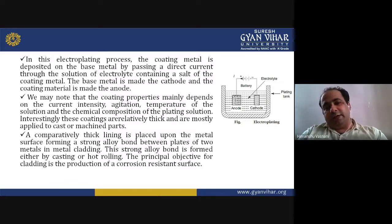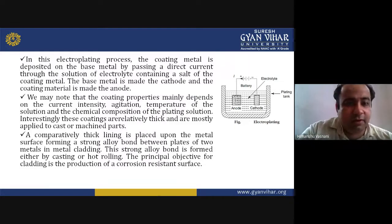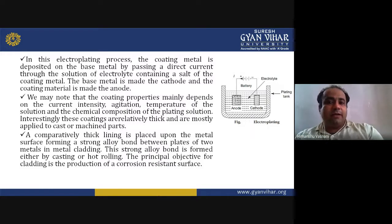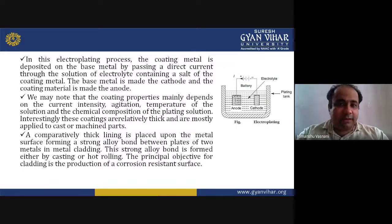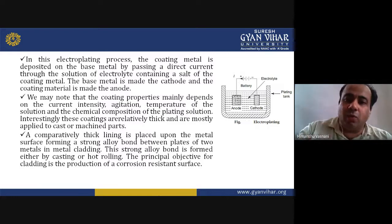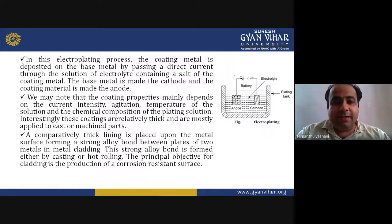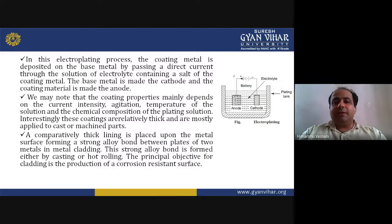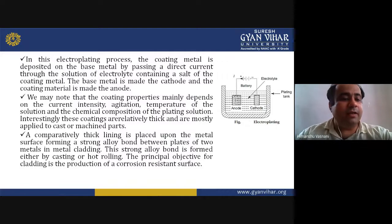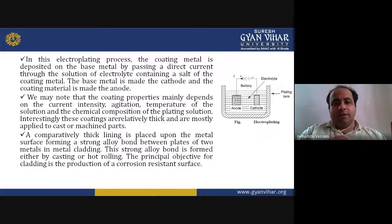In the electroplating process, the coating metal is deposited on the base metal by passing a direct current through a solution of electrolyte containing a salt of the coating metal. The base metal is made the cathode and the coating material is made the anode. Coating properties depend on the current intensity, agitation, temperature of the solution, and chemical composition of the plating solution. These coatings are relatively thick and mostly applied to cast or machine parts.